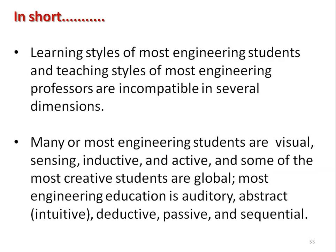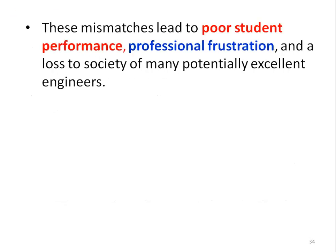In summary: the learning styles of most engineering professors are incompatible with their students in several dimensions. Many or most engineering students are visual, sensing, inductive and active — and some of the most creative students are global. But most engineering education is auditory, abstract, intuitive, deductive, passive and sequential. This mismatch leads to poor student performance, professional frustration, and a loss to society of many potentially excellent engineers.